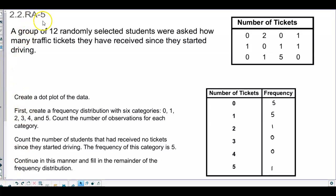Section 2.2 RA 5. A group of 12 randomly selected students were asked how many traffic tickets they have received since they started driving. So here's the table of traffic tickets.